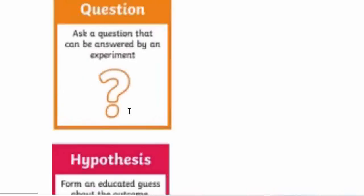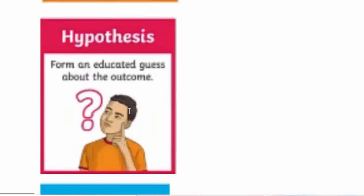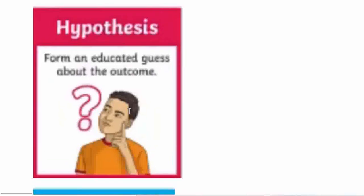Let's get started. Scientific inquiry begins with the scientific method. The first step is a question — we ask a question that can be answered by an experiment. The next step is we form a hypothesis. What is a hypothesis? It is an educated guess about what the outcome will be.